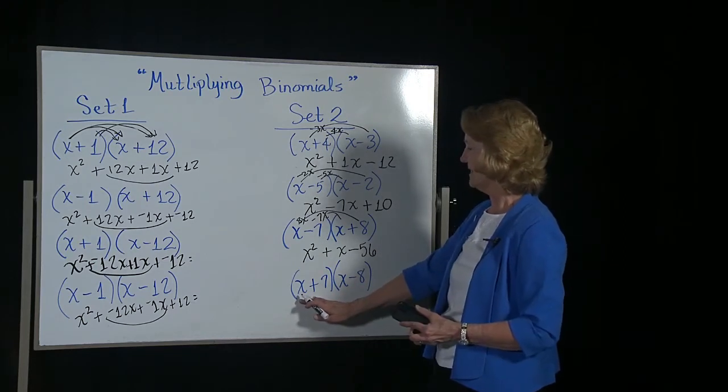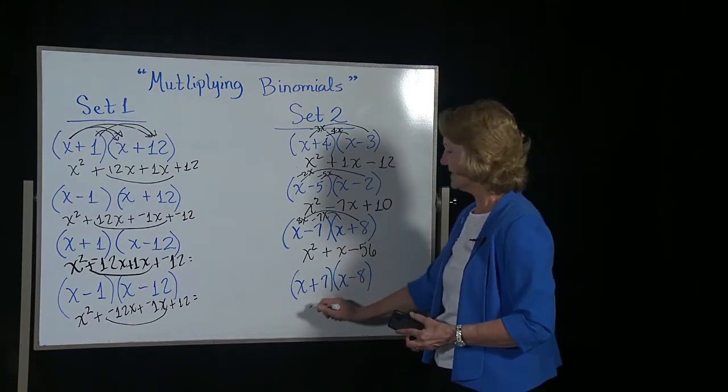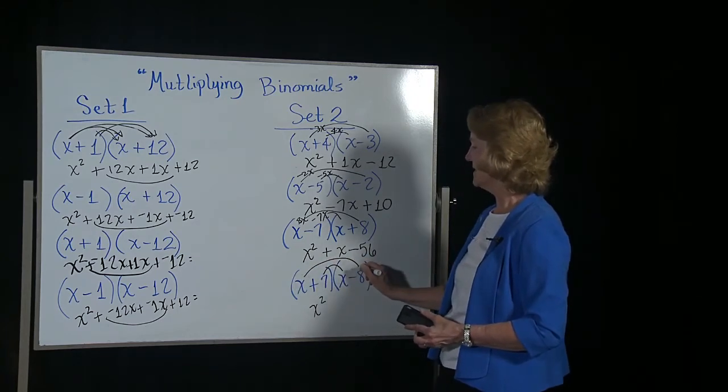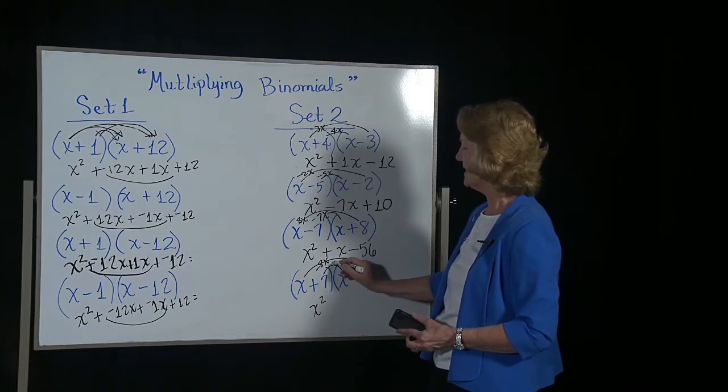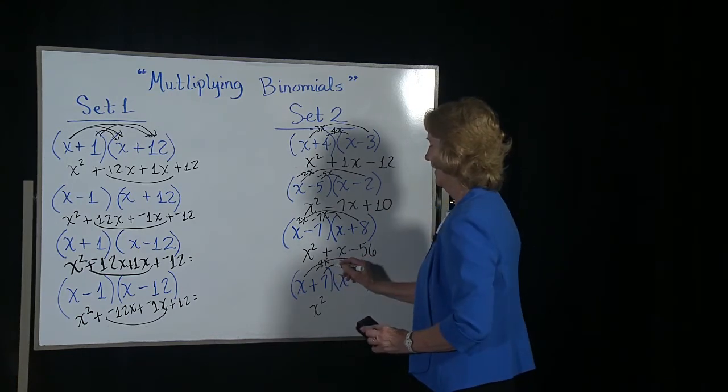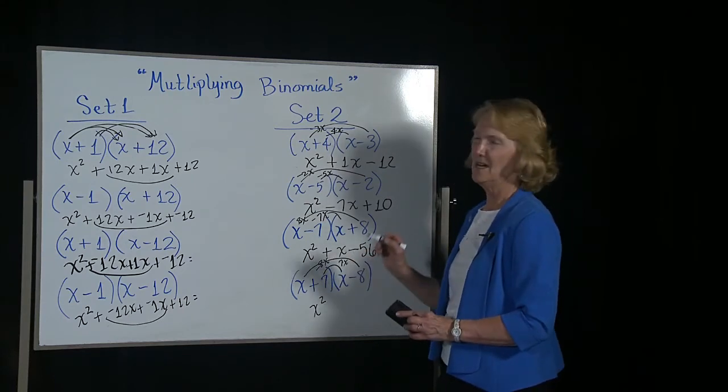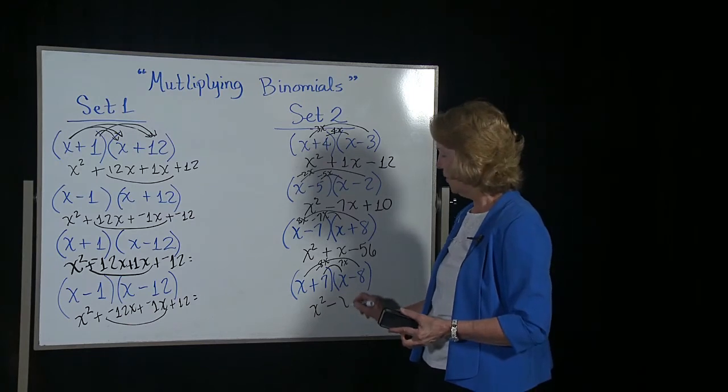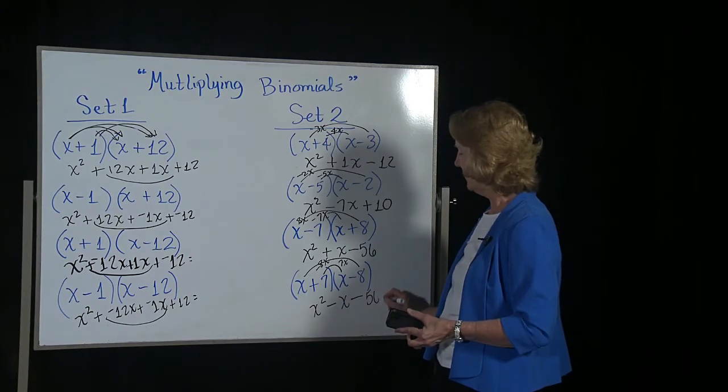Next one, we have x plus 7, x minus 8, so I reverse the signs. x times x gives you x squared. x times negative 8x gives you negative 8x. 7 times x gives you 7x. Negative 8x and a positive 7x. If you're in debt 8 dollars and you paid off 7, you're still in debt 1 dollar.